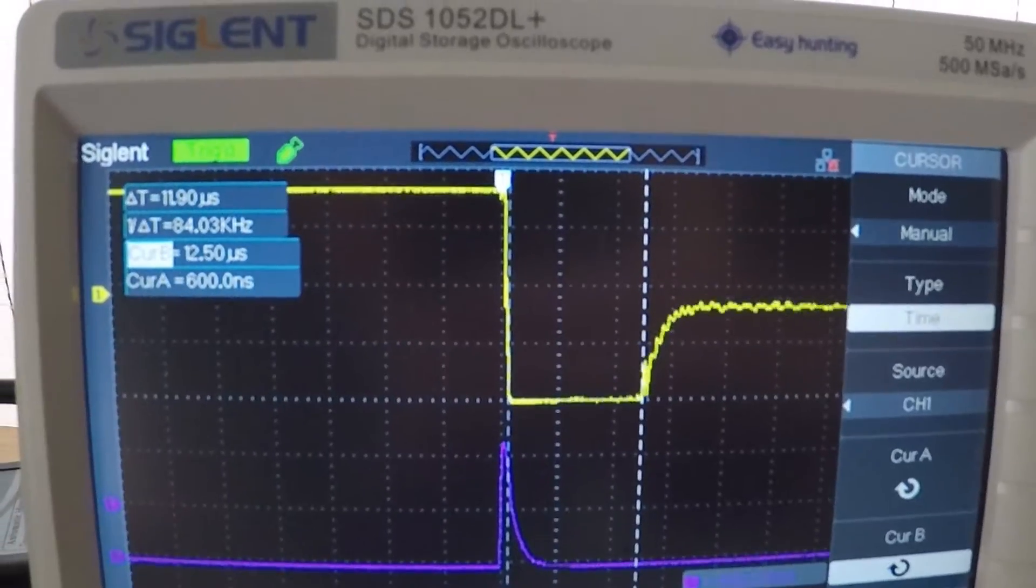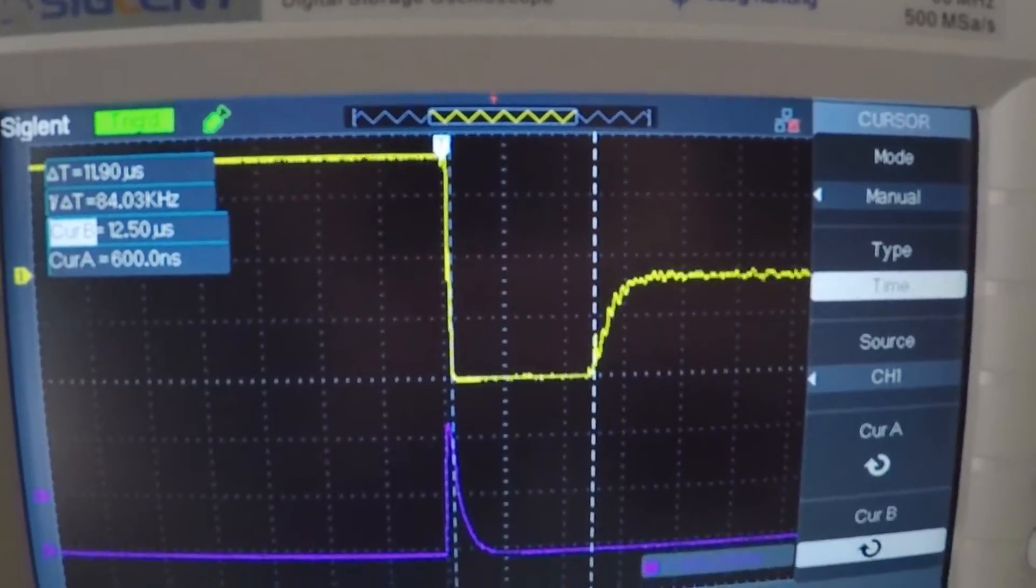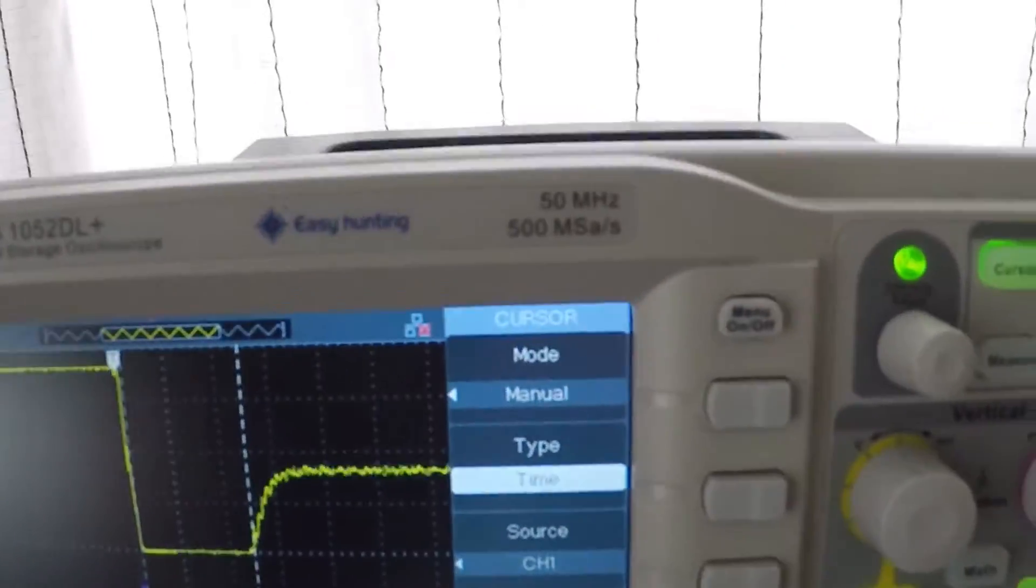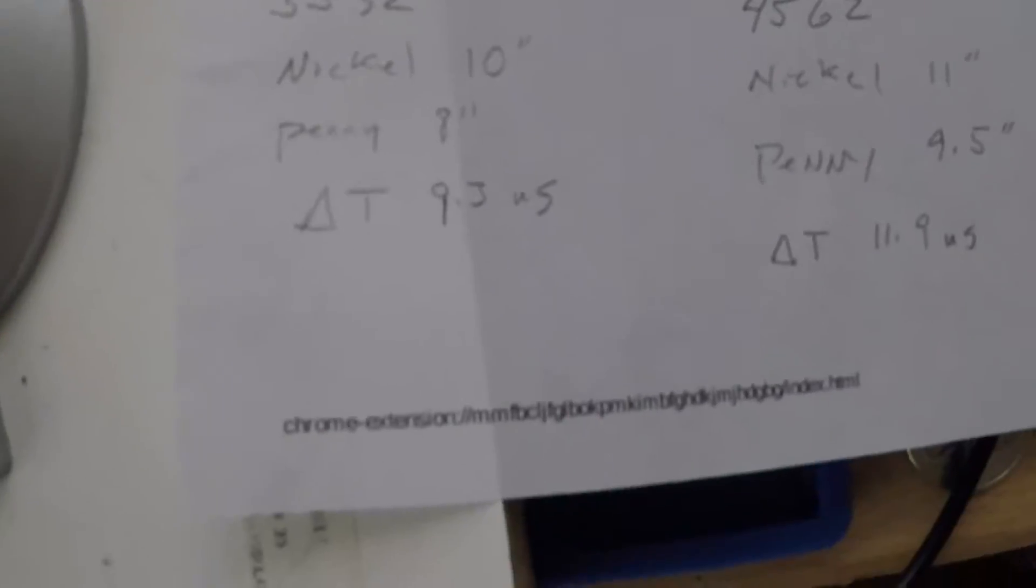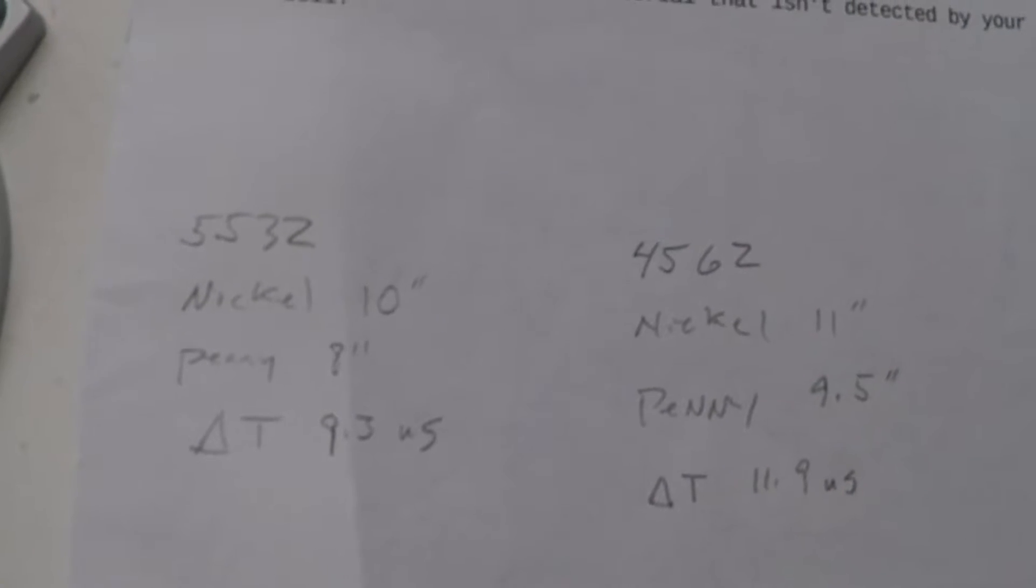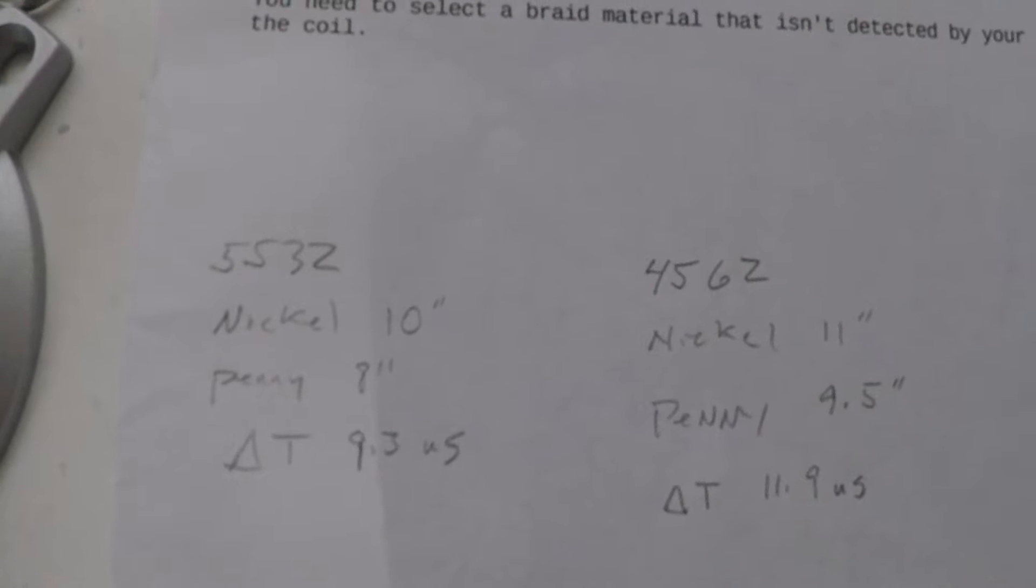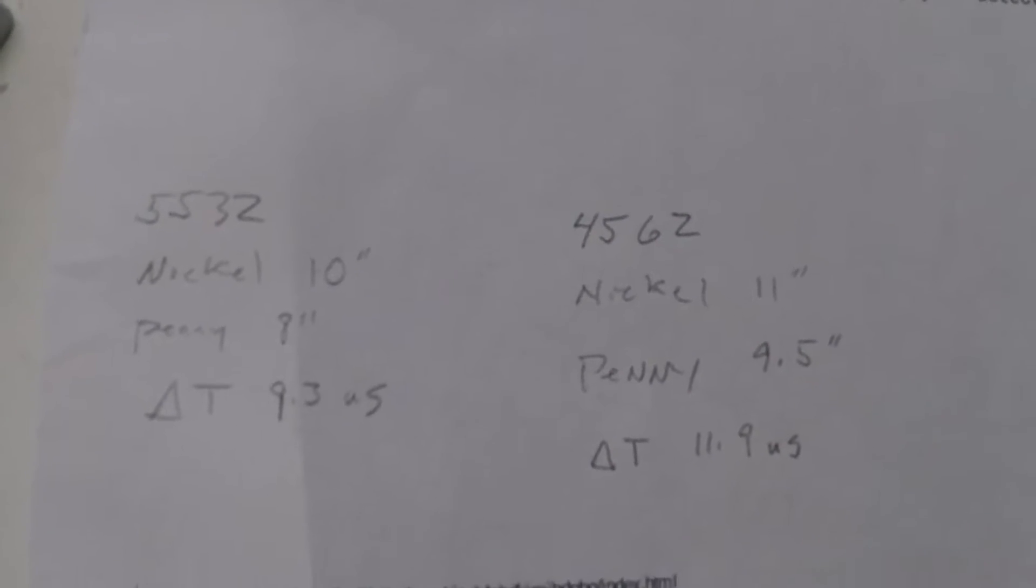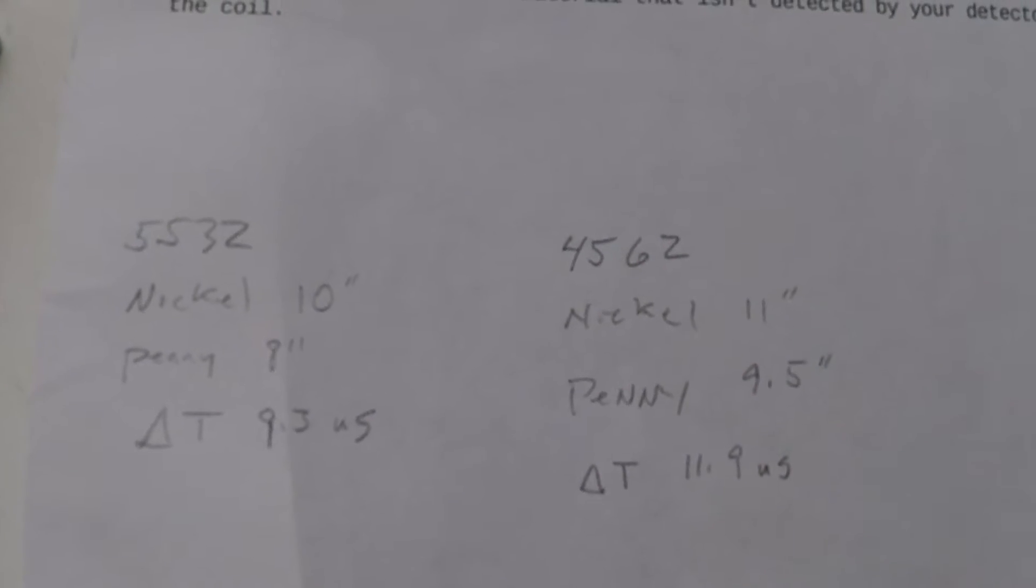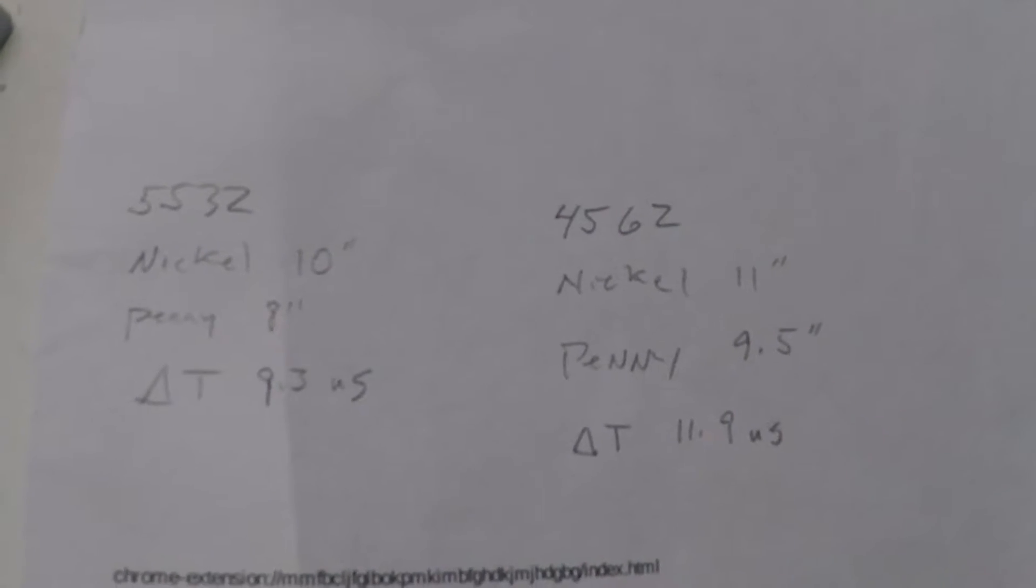I also compared some air detection readings and this is what I got between the two. You can see with the 5532 I was getting 10 inches for nickel, about 8 inches for penny. And with the 4562 I jumped up to 11 inches for the nickel and nine and a half for penny.